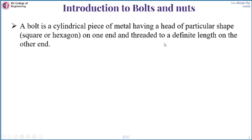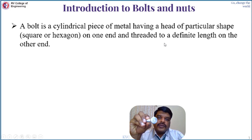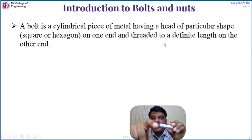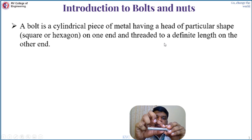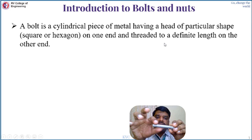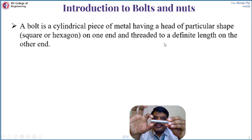Introduction to bolt and nuts: a bolt is a cylindrical piece having a particular shape at the head. You can see the head portion of the bolt. The other end of the bolt has a thread portion. The thread length depends on the length of the bolt. On this bolt you can see that the entire length has external threading — this is called external threading.